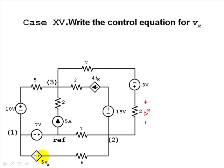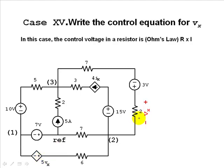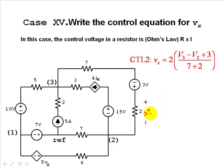What if this controlled voltage source depends on the voltage across this 2-ohm resistor? Again we use Ohm's law: the voltage is 2 ohms times the current flowing from high to low (downwards). That current downwards is V3 minus V2 plus 3, divided by 9. Multiply by 2 ohms to get Vx. That is the controlling equation for Vx — 2 ohms times the current flowing from node 3 to node 2 through that branch.